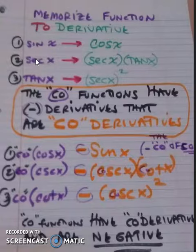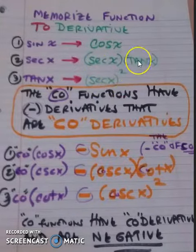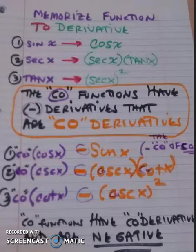Cosecant is the co-function for secant. Its derivatives are the co-derivatives. Cosecant cotangent, and a co-function has a negative derivative.